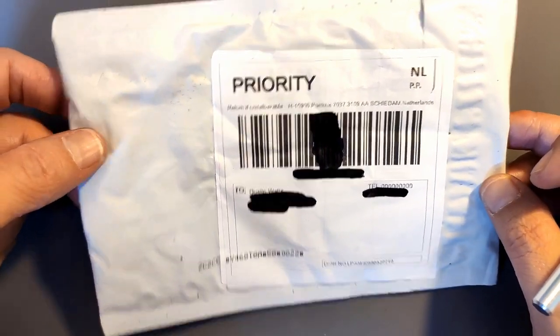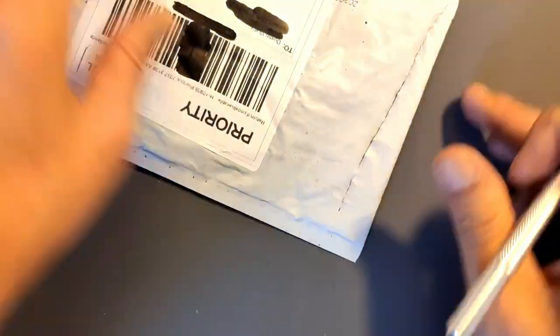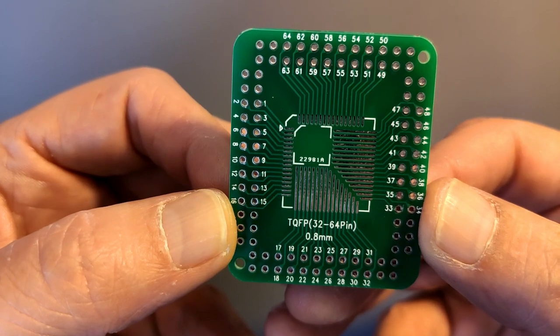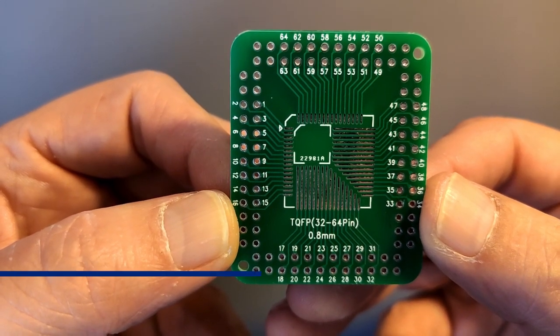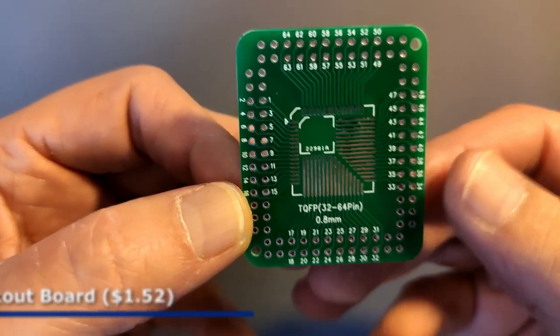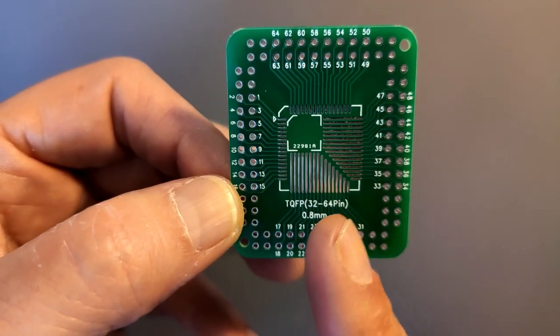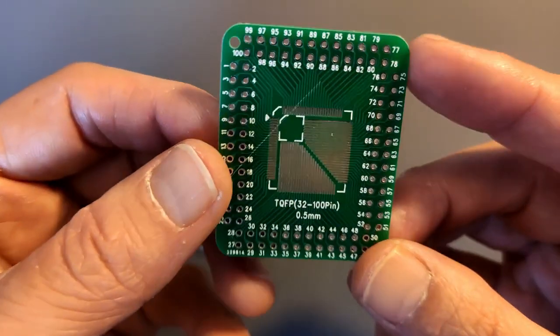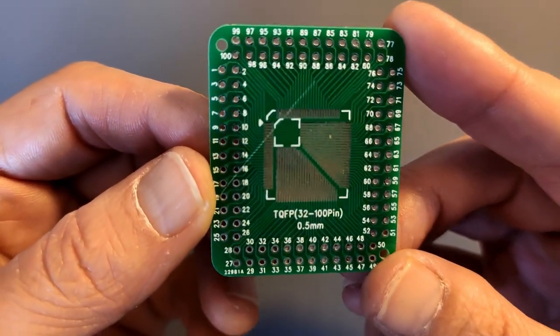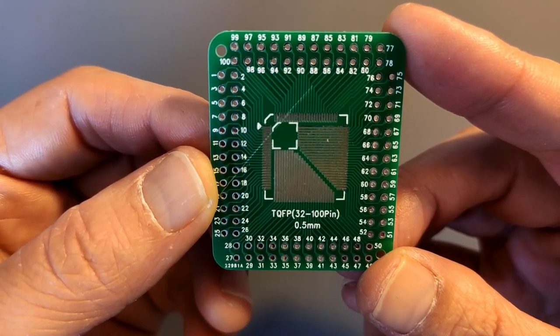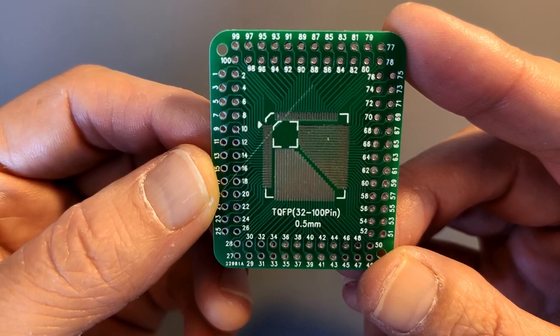Next up, descriptionless. And these are breakout boards for a TQFP package with a lead spacing of 0.8mm. And it's for 32 pins up to 64 pins. And on the other side, this is also for a TQFP package. In this case from 32 pins up to 100 pins.